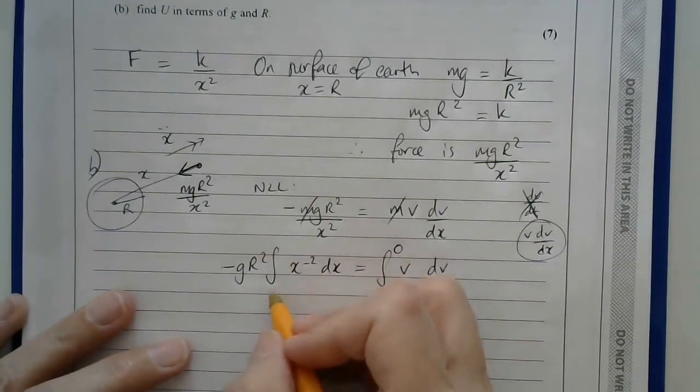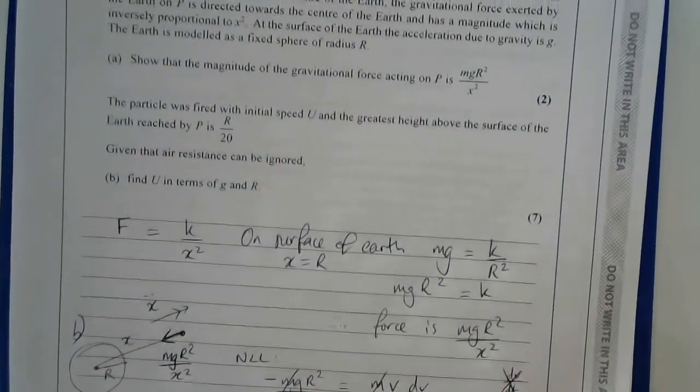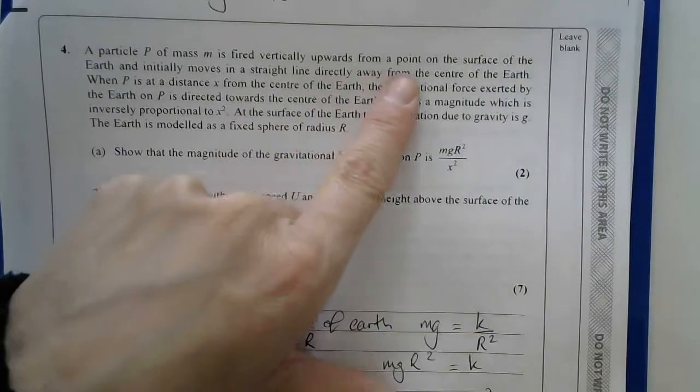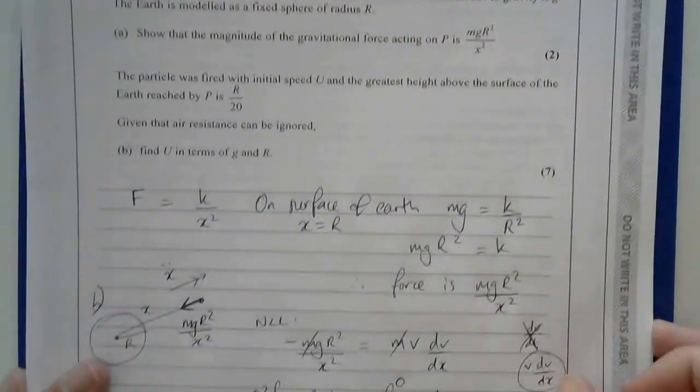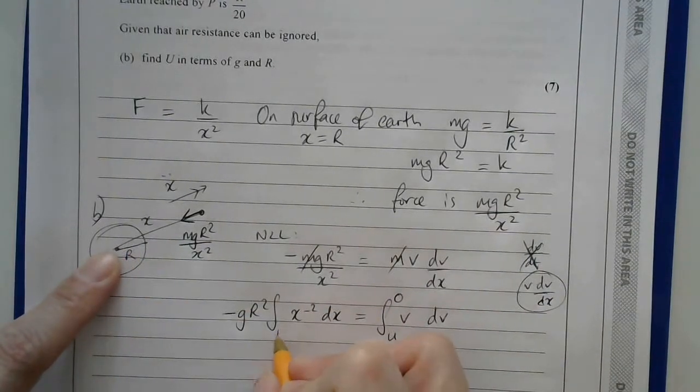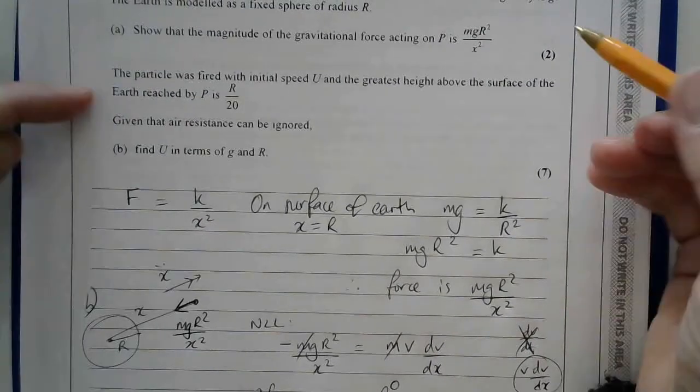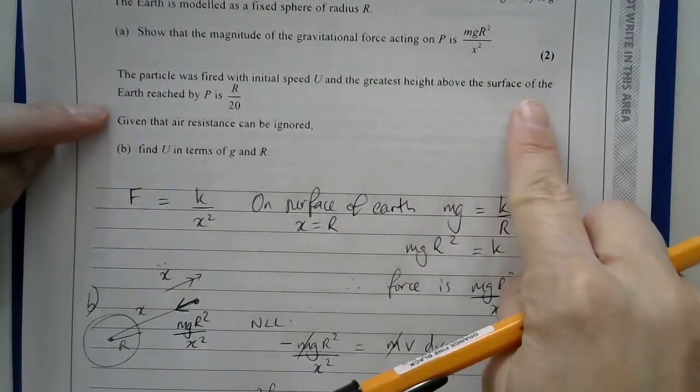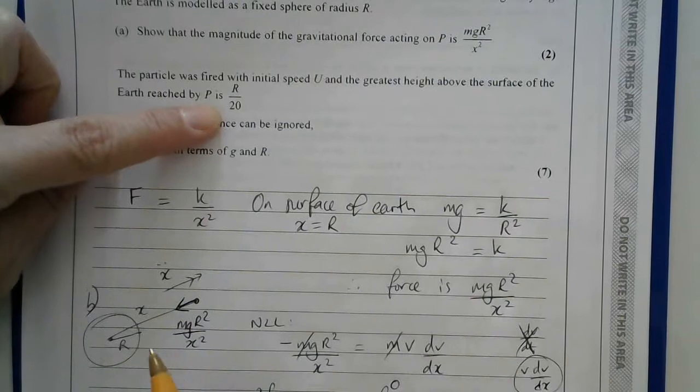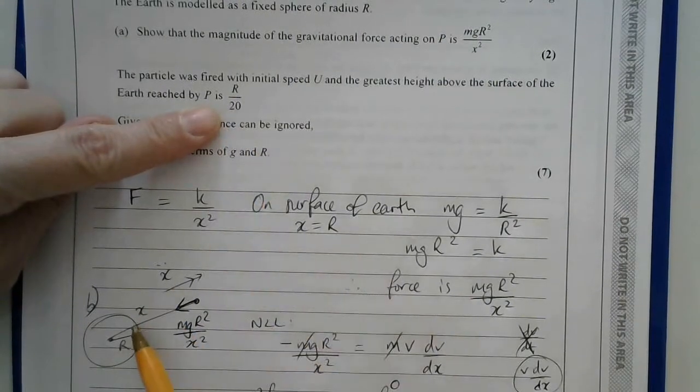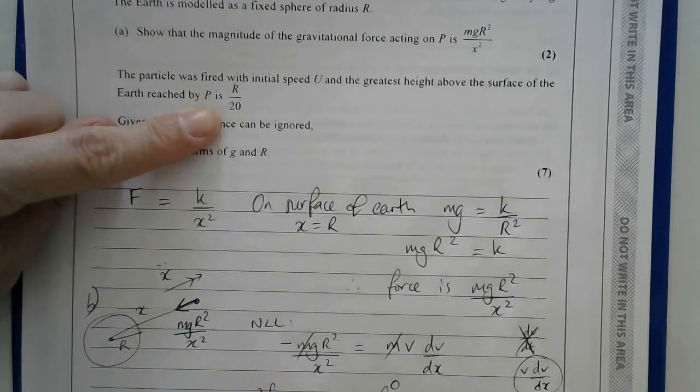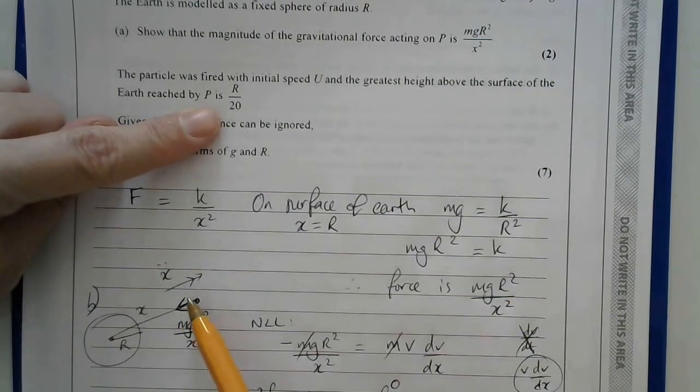As for the distance, well, I know the particle was fired from the surface of the earth. Here we are. It was fired vertically upwards from a point on the surface of the earth. So I know that initially, the value of x must be r, because the particle is here. And then I was told halfway through the question here, the greatest height above the surface of the earth is r over 20. So I just need to be a little bit careful here, because this r over 20 is the distance from the surface of the earth to where the particle is.